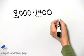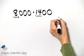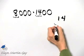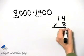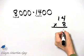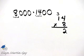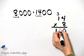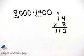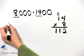So let's go off to the side and let's multiply 14 and 8. 14 times 8. 8 times 4 is 32. Carry the 3. 8 times 1 is 8, plus 3 is 11. So the product of 14 and 8 is 112.